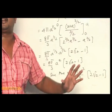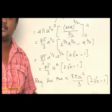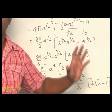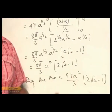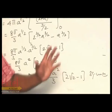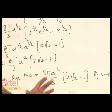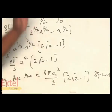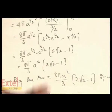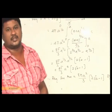This is a very important and simple problem. We found dy/dx, computed 1 plus (dy/dx) squared, and substituted the square root expression into the formula. Taking the limit as x equals 0 to a and integrating, we obtained the final result as 8π a squared by 3 times (2 root 2 minus 1) square units.